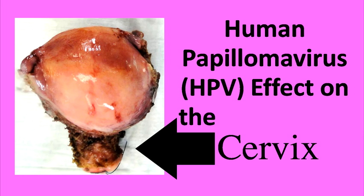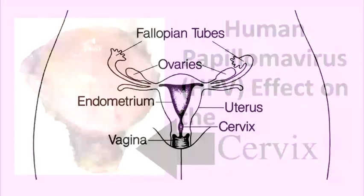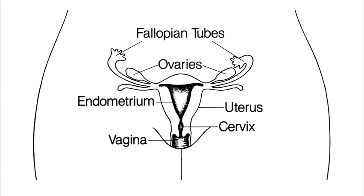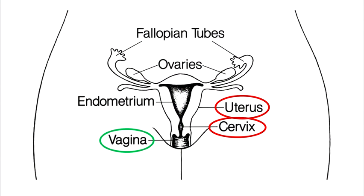This video will demonstrate the effects of human papillomavirus, or HPV, on the human cervix. The cervix is part of the uterus, or womb, where the baby develops. The cervix is just the narrowed end of the uterus, and it's located at the end of the vagina.